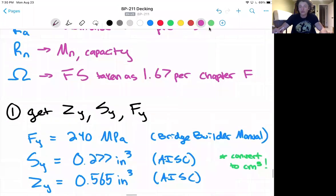Fy is 240 megapascals taken from the bridge builder manual and that's just the yield strength of steel. Sy is 0.277 inches cubed from the AISC shapes database and Zy is 0.565 inches cubed from the shapes database for the C4 by 5.4 shape and remember unit analysis you're going to have to convert this to centimeters cubed eventually.